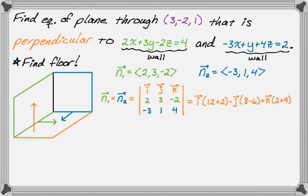So if I simplify it, I'm going to write it in component form. So I get 14, negative 2, and 11. And that's going to be the normal vector to the floor, the normal vector to the plane that I'm looking for.